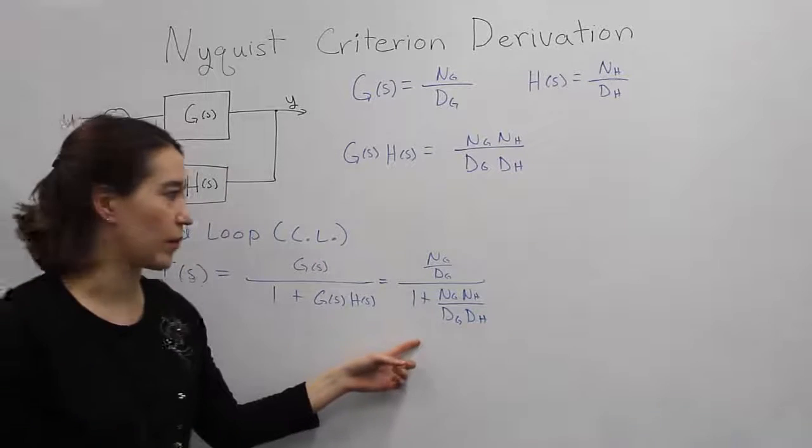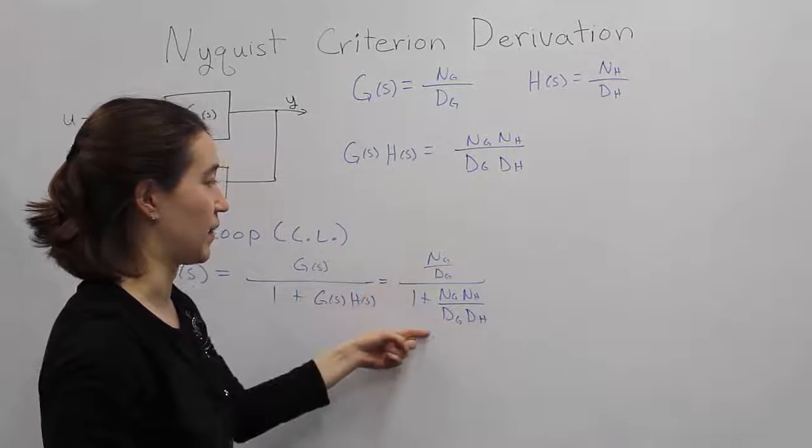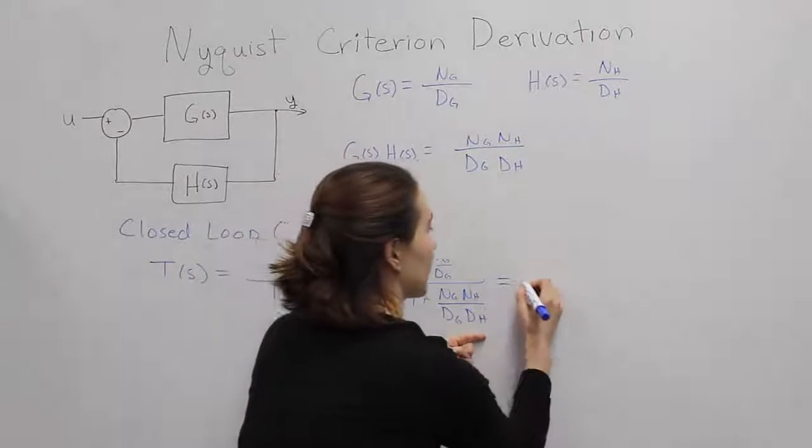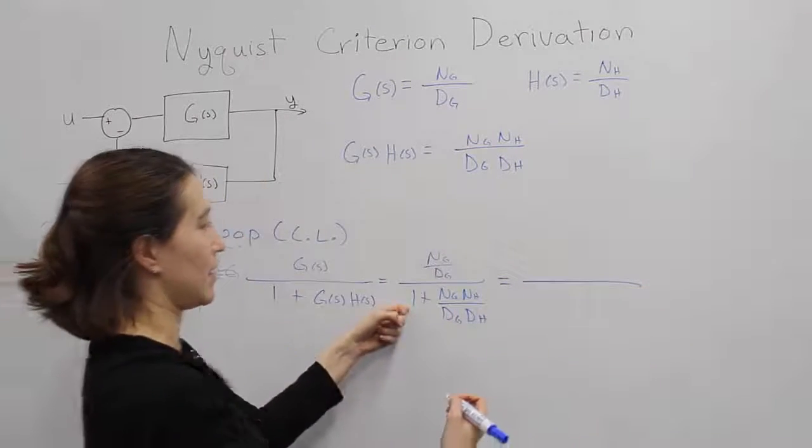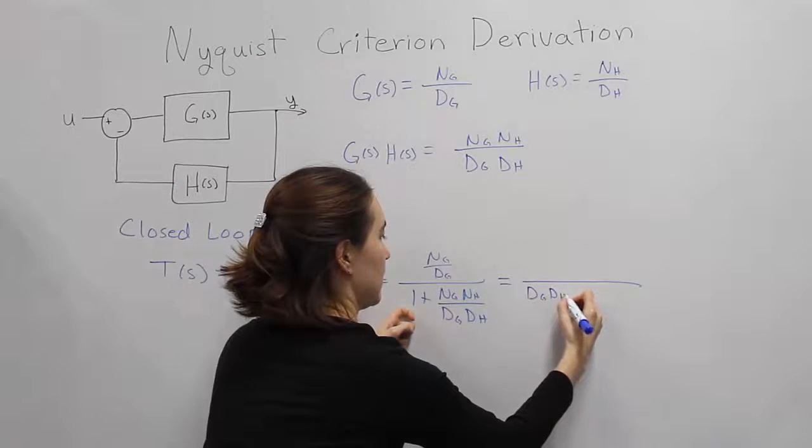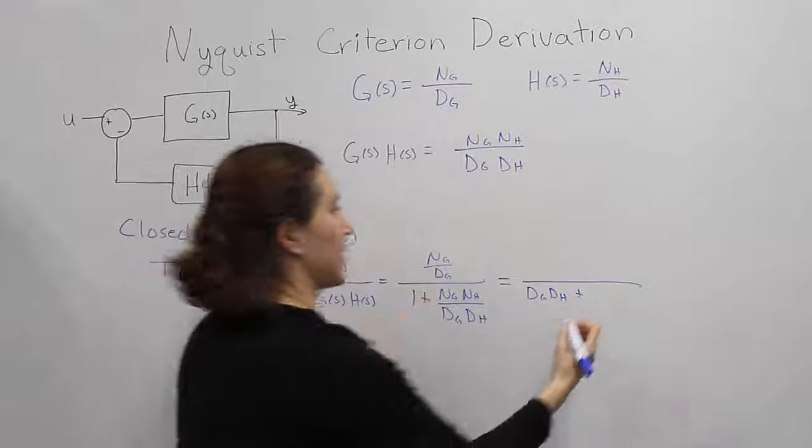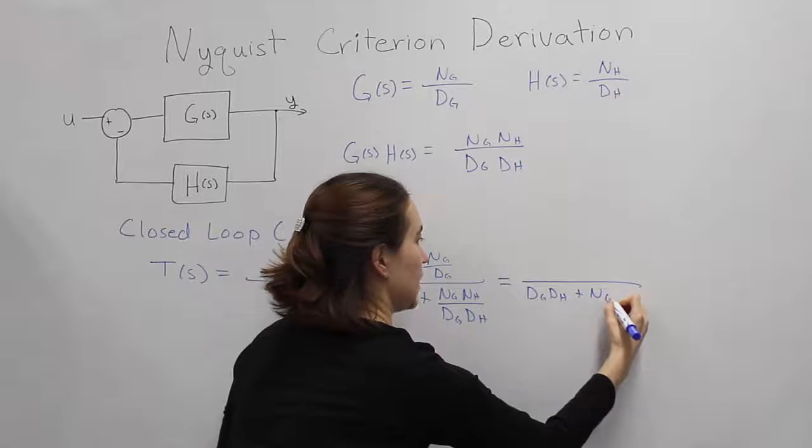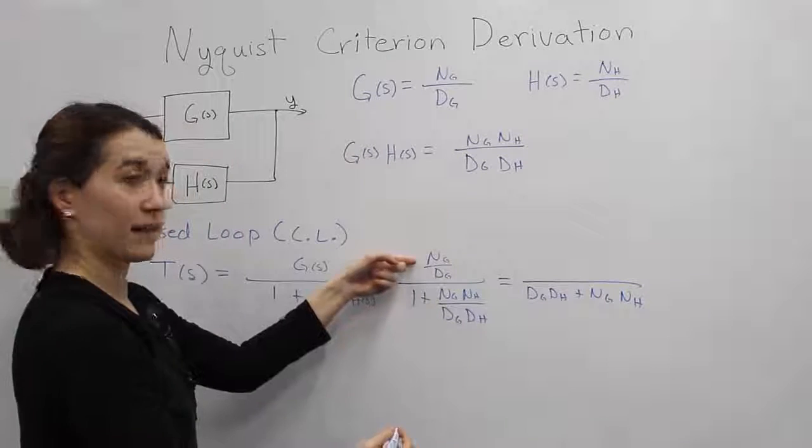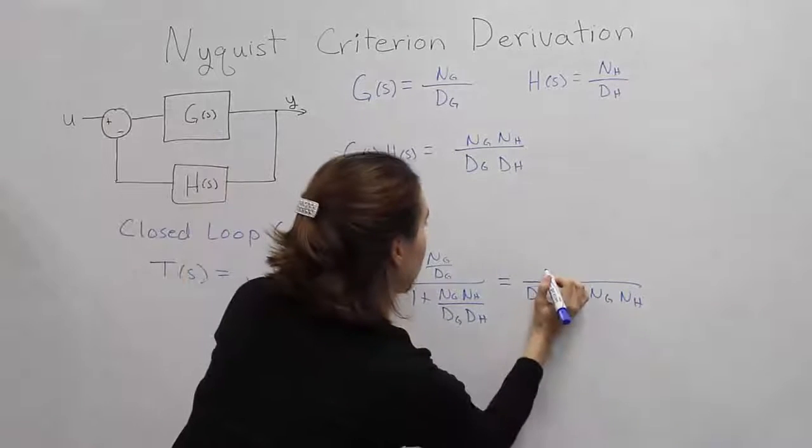Okay, let's simplify this a little bit more. If we multiply the top and the bottom by dG, dH, we will get a slightly different expression. So multiply this, so we get dG, dH, plus the numerator here, nG, nH, and then we multiply the same up here. We get nG.